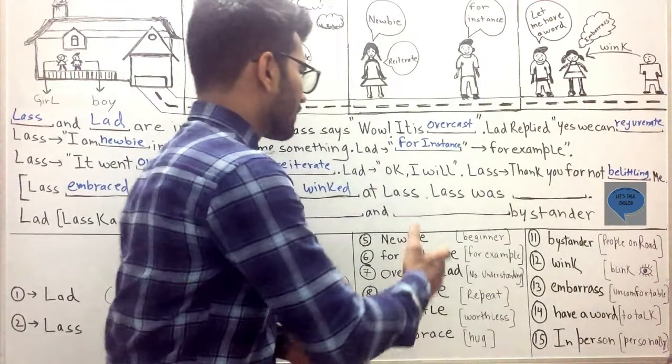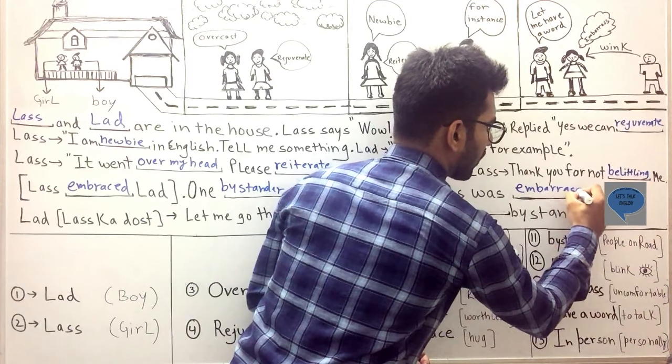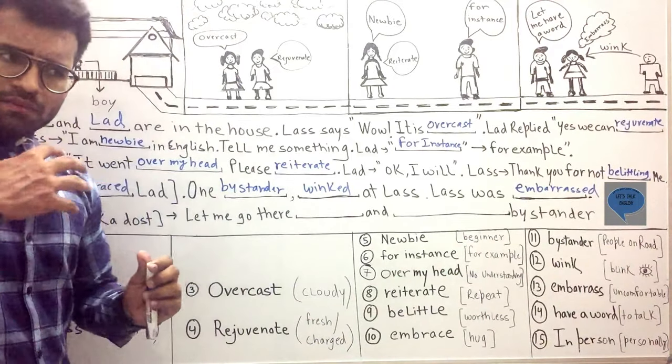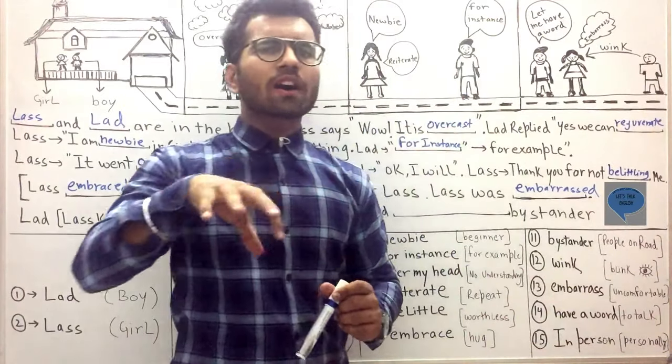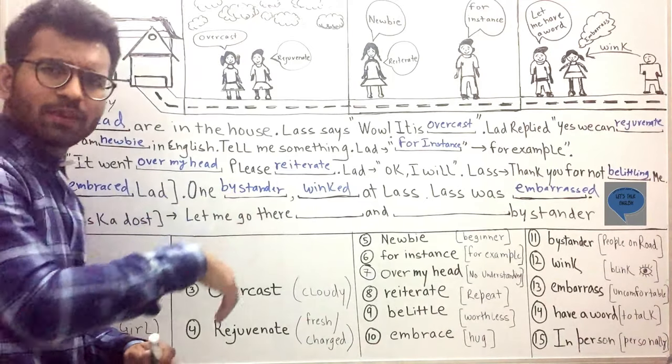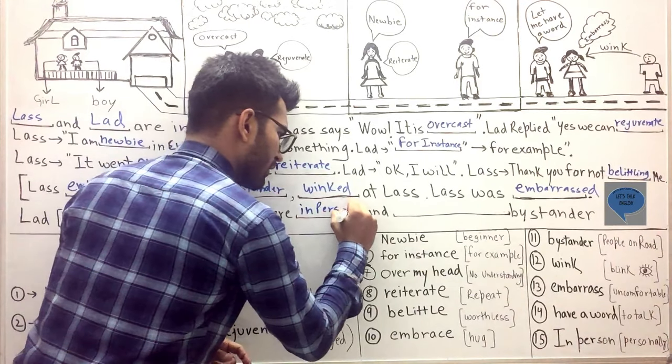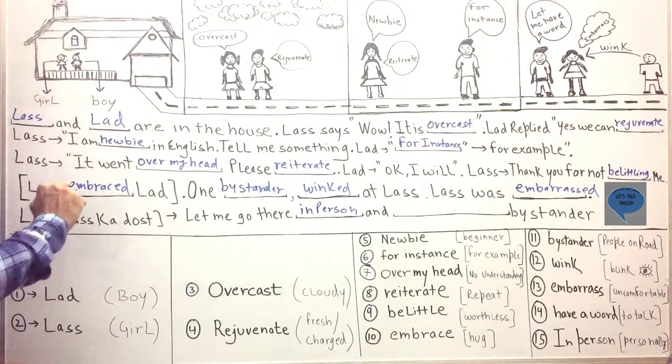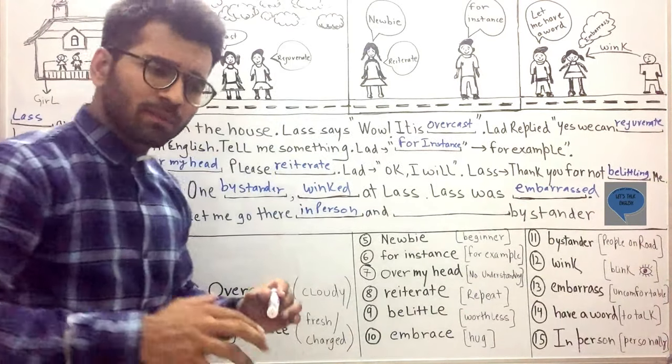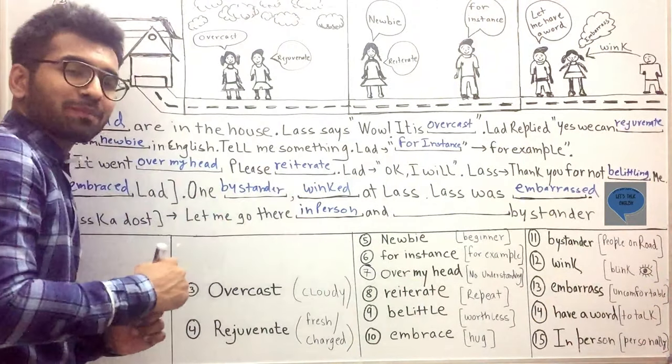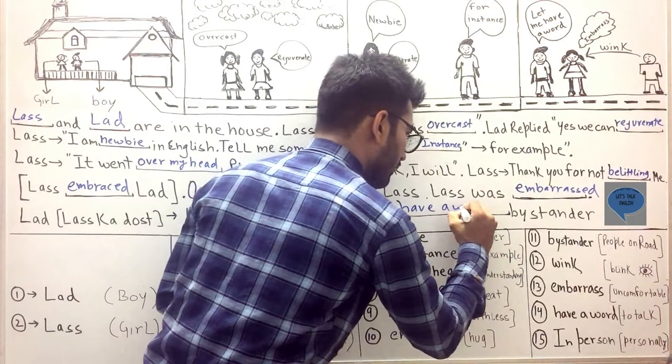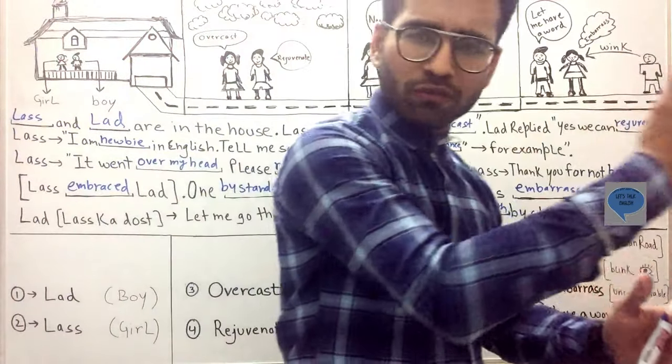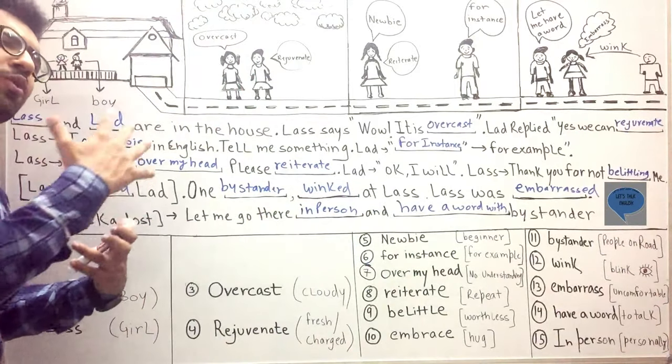So the lad who is lass's friend, he thought, this person winked at her. So what happened? Lass said let me go there in person. Let me go there in person. In person means to be physically present. So lad, who is lass's friend, he said let me go there in person. I will be physically present instead of talking on phone. Let me go there in person and have a word. Look at this phrase - have a word, have a word with bystander. I will be physically present, let me go there in person and have a word with bystander. Brother, what's the matter, why did you wink at my friend lass?